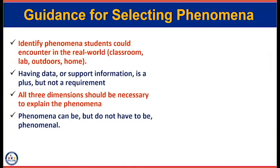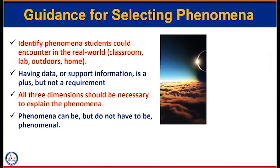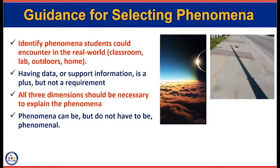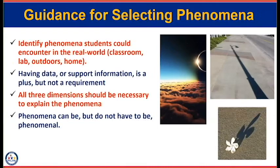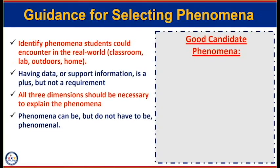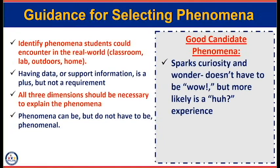For example, we could take something amazing like casting a shadow on the sun, but can I actually get out there and show my students that? No. Could I pick something more simple with the same idea — like a light post casting a shadow on the ground, or a flower doing the exact same thing? The point is, phenomena can be phenomenal but they don't have to be. How do we know when we've found a good candidate phenomenon? Does it spark curiosity and wonder? It doesn't always have to be 'wow' — more of a 'huh' gets kids starting to think about how to figure this out.